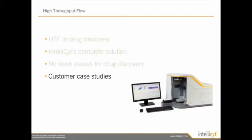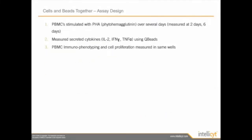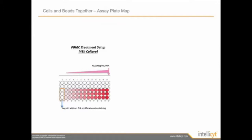That leads me into my customer case study. One of our customers was interested in looking at PBMC stimulation with PHA to measure secreted cytokines — IL-2, interferon gamma, and TNF alpha — with the Q-Beats. On top of that, they wanted to monitor cell proliferation within PBMC cell populations using CD3 and CD8 markers at a two-day and six-day period, all together with a no-wash assay protocol. The researchers started with a source plate containing PBMCs cultured for 48 hours and treated with varying concentrations of PHA across the plate.